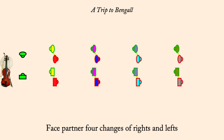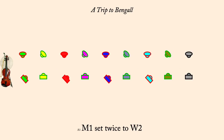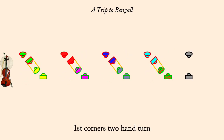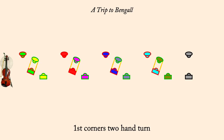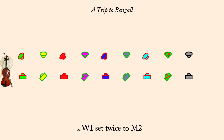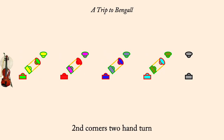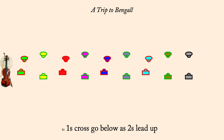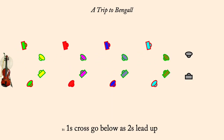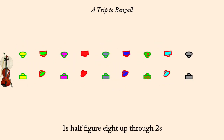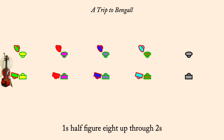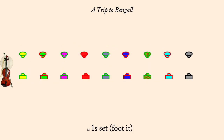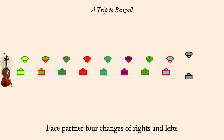Man one set twice to woman two. First corners two-hand turn. Woman one set twice to man two. Second corners two-hand turn. One's half figure eight up through twos. One's set, face partner, four changes of rights and lefts.